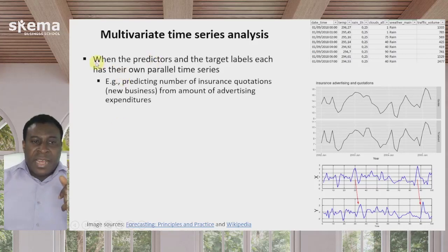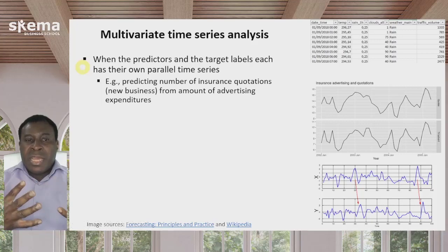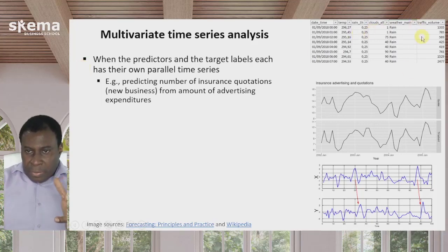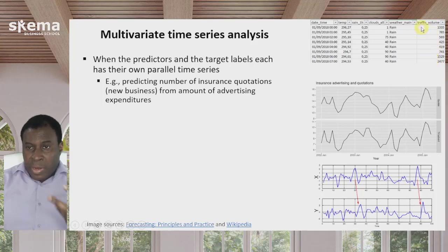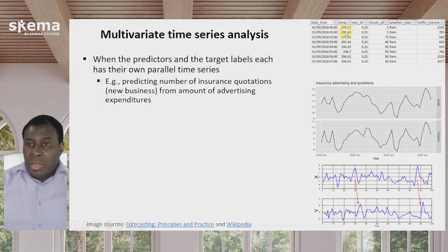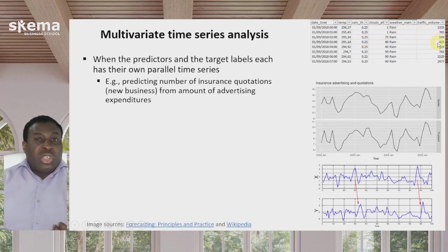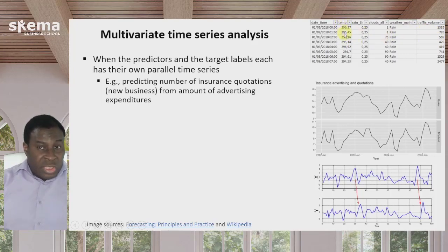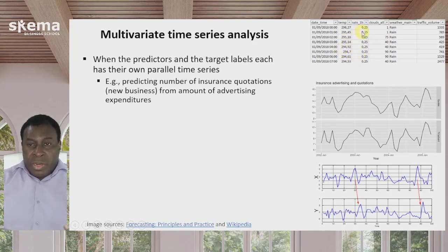In multivariate time series analysis, the predictors and the target labels each have their own parallel time series. Here's a small example: the target is traffic volume — how much traffic there is on a highway at a certain point in time. But in addition to looking at the sequential times and traffic, you look at the temperature in Kelvin at each point in time, how much rain there was, the cloud coverage, and even the main kind of weather at that time. These things might affect how much traffic there is. Each of these has its own parallel time series — temperature at one point is partially determined by the temperature of the hour before, and so on.